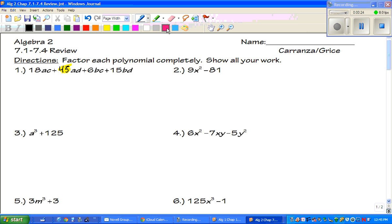Take a look at number 1 because number 1 did change just a little bit. Let's go ahead and get started. The first thing we have to do every single time is to see if there is a GCF. So is there a GCF in number 1? And the answer is yes. We can take out a 3 from all of this. So the 3 comes out front and we're left with 6AC plus 15AD plus 2BC plus 5BD. Just be very careful with all of the variables.